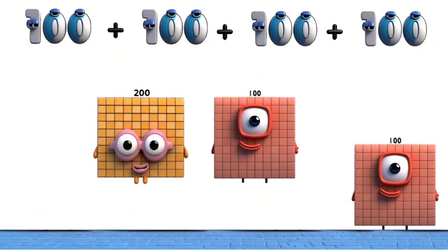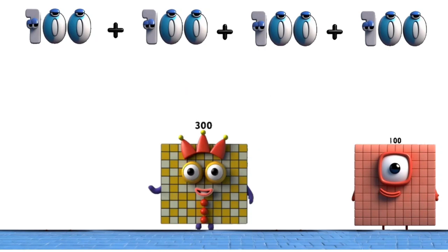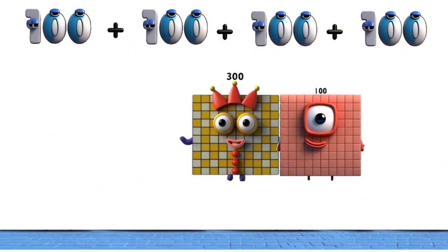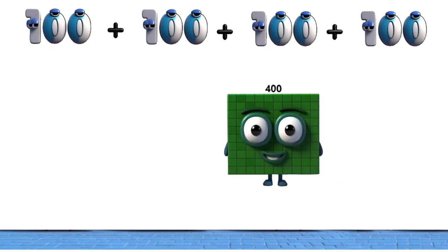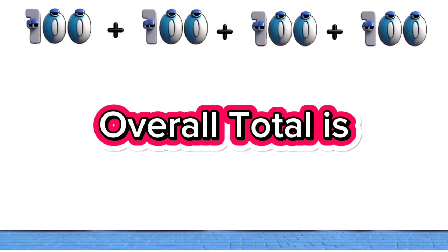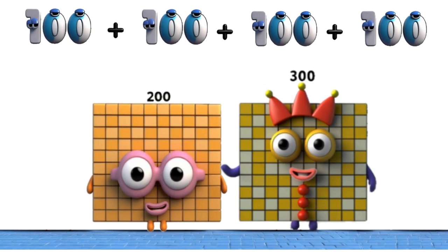200 plus 100. 300 plus 100 equals 400. Overall totals: 200, 300, 400.